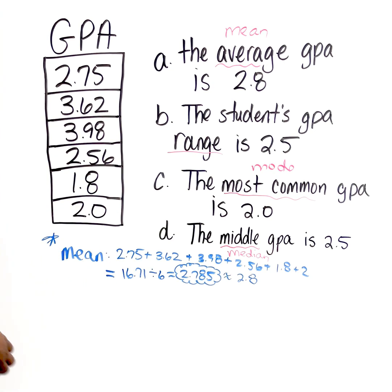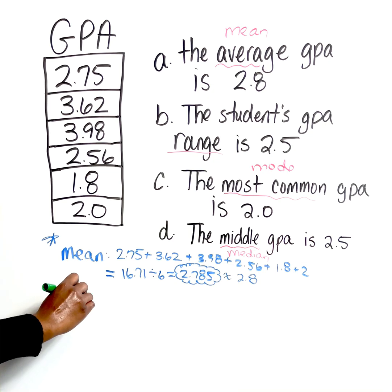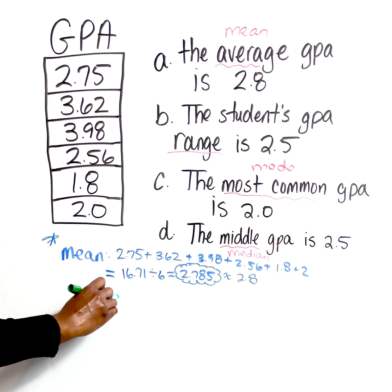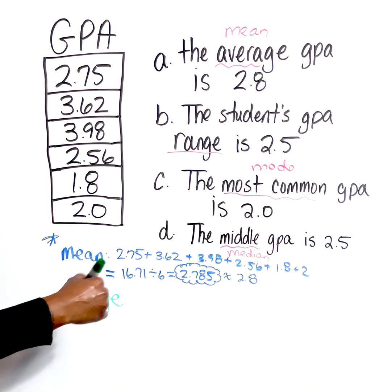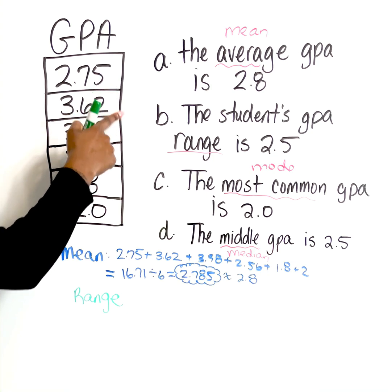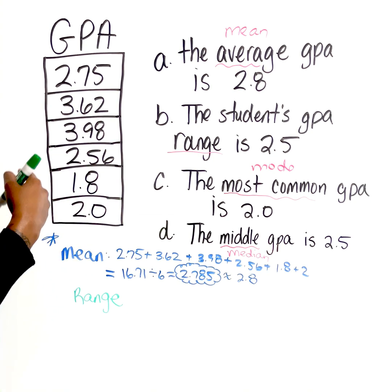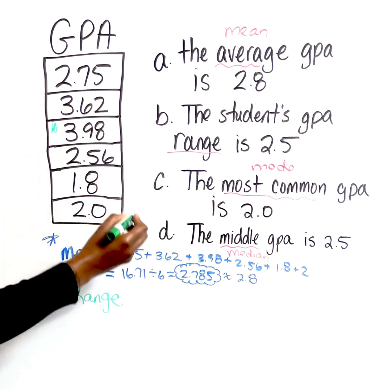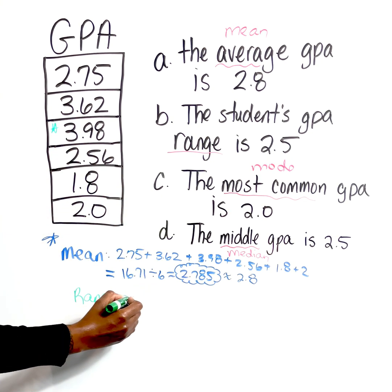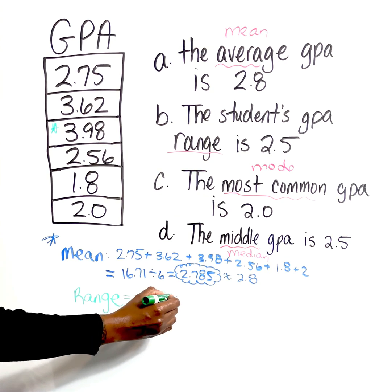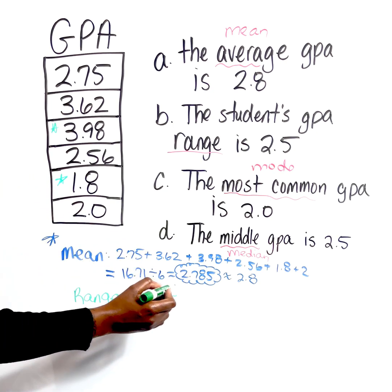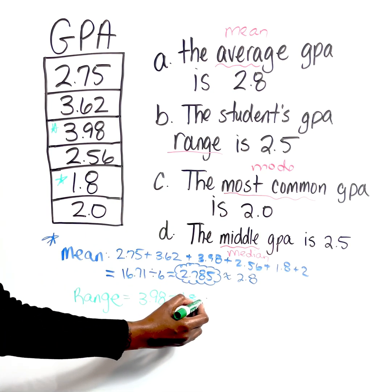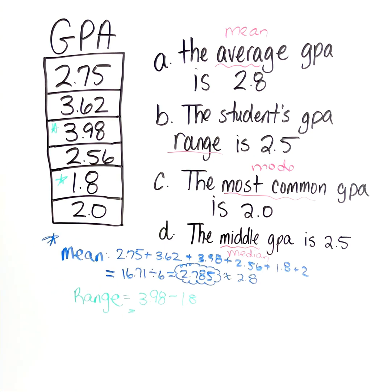So it says the student's GPA range is 2.5. So let's go ahead and let's calculate the range. So with the range, of course, remember we're subtracting the lowest value from the highest value. So normally I will put the values in order from least to greatest first and subtract. But in this instance, to save time, I'm not going to. So I know the largest value is 3.98 and the smallest value is 1.8. So if I subtract those,